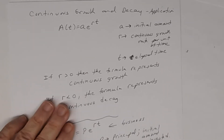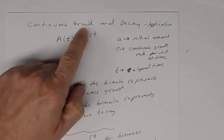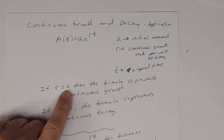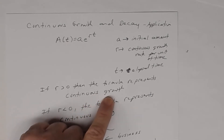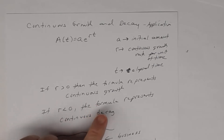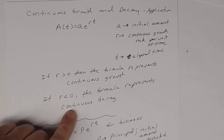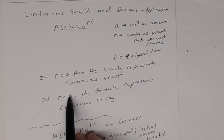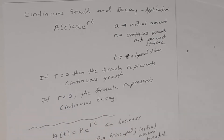One thing to remember is growth versus decay. If you're talking about growth, r will be positive. If you're told it's a decay, r will be negative. So if the problem says 'continuously decay,' make sure r is negative; if it's 'continuous growth,' make sure r is positive.